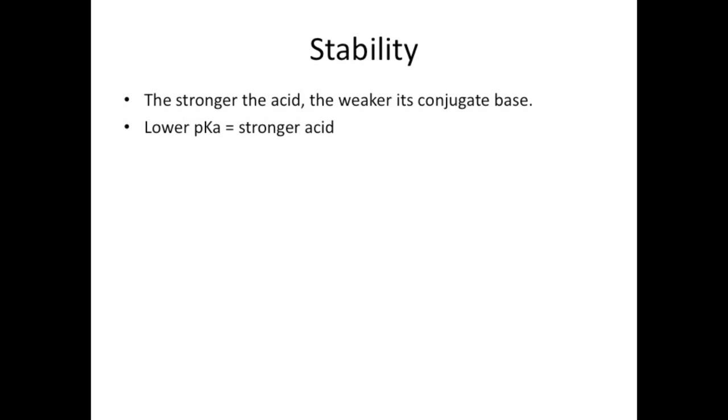So a strong acid has a weak conjugate base and this makes sense because if the base were strong, it would want to hold on to that proton. So what makes a base weak? Stability does. The weaker a base, the more stable it is. Conversely, the stronger a base, the less stable it is.